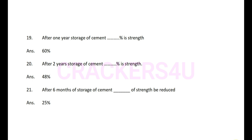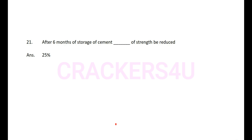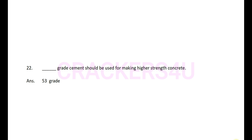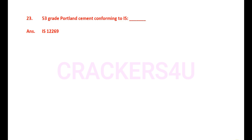After six months of storage, 25 percent of strength is reduced, meaning only 75 percent strength remains. Question 22: Dash grade cement should be used for making higher strength concrete — answer: 53 grade cement.